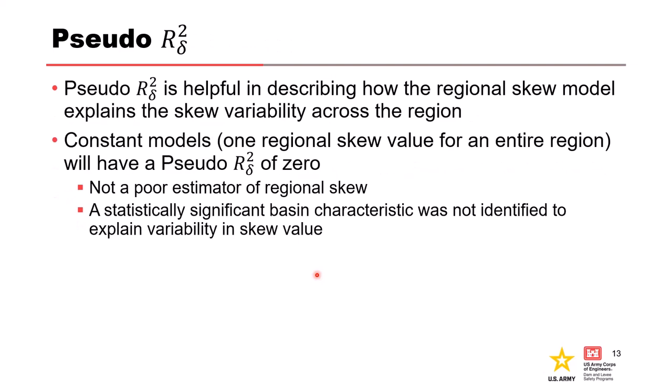Back to pseudo R-squared: it's helpful in describing how the regional skew model explains the skew variability across the region. Constant models — meaning just one regional skew value for the entire region, like the Great Lakes and Ohio River study — will have a pseudo R-squared of zero. A pseudo R-squared of zero doesn't mean it's a bad estimator; it just means no statistically significant basin characteristic was found to explain the variability in skew. Other times a basin characteristic might be used to modify the regional skew value.